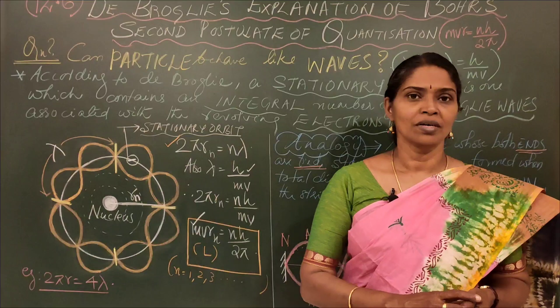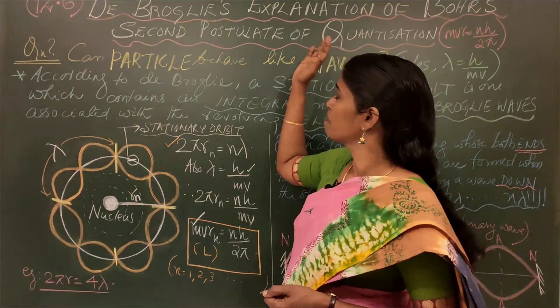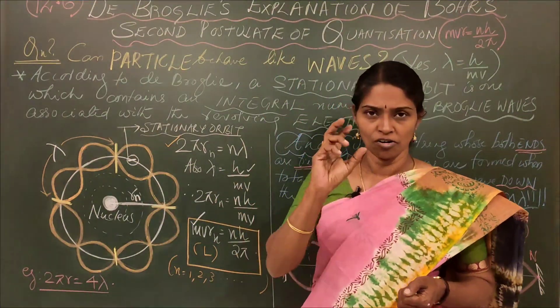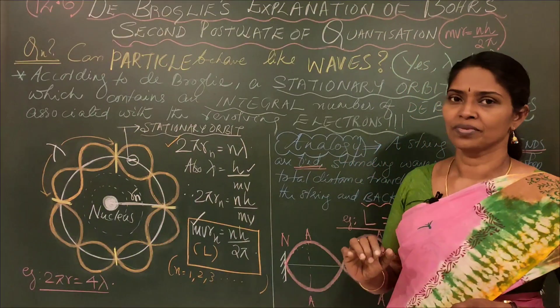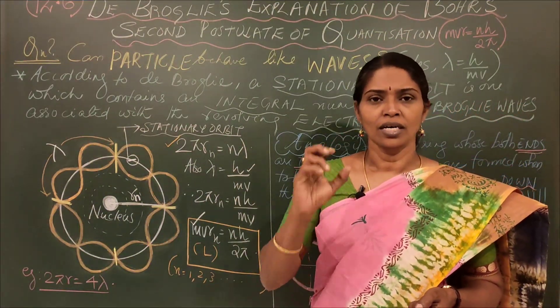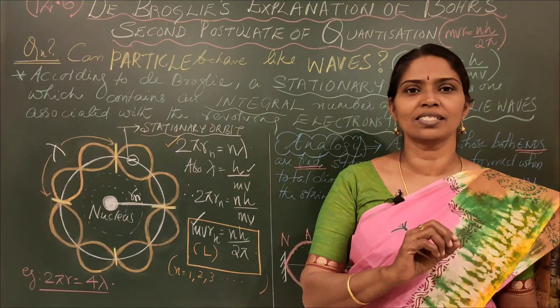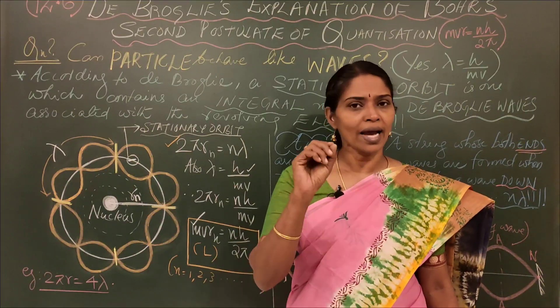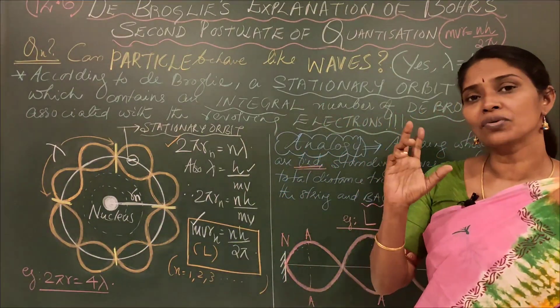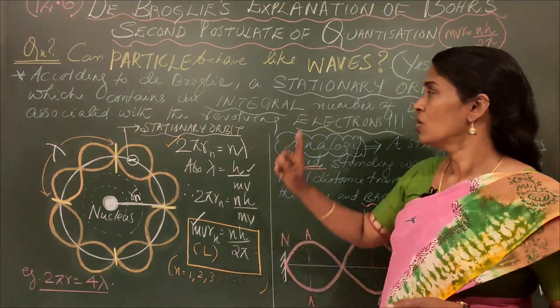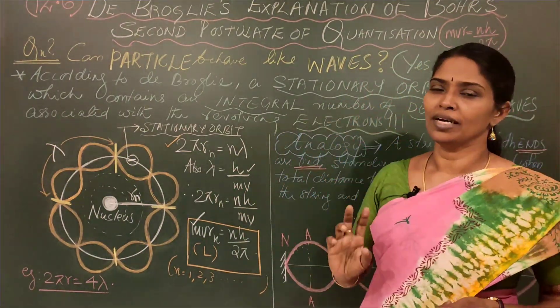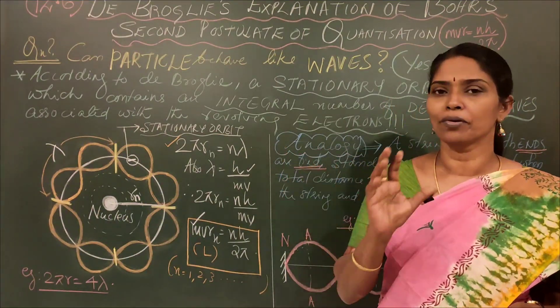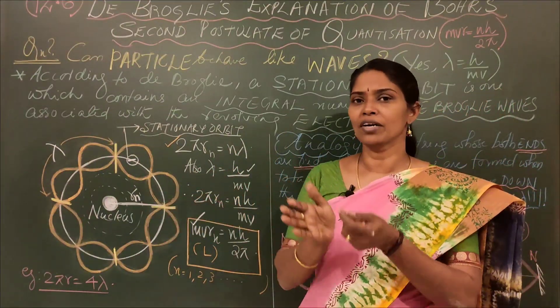Ten years later, de Broglie explained Bohr's second postulate of quantization. Bohr mentioned that particular stationary states should have a certain property: angular momentum can have only discrete values like 1h/2π, 2h/2π, 3h/2π and so forth, with no values possible in between them. So that we call quantization.